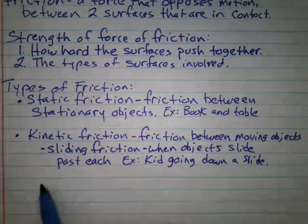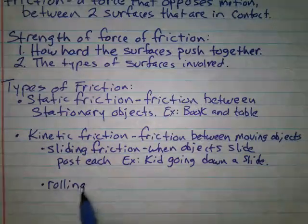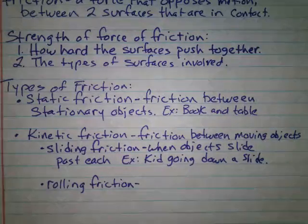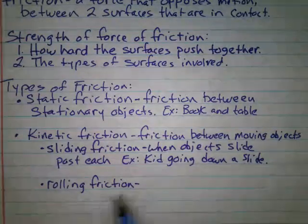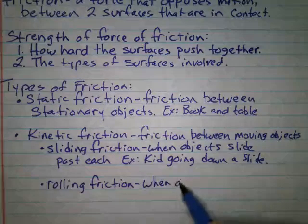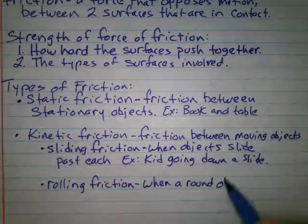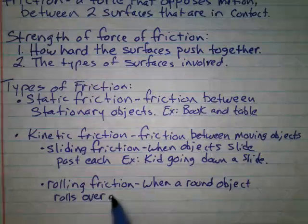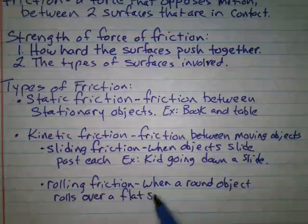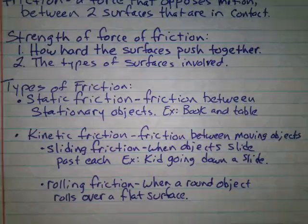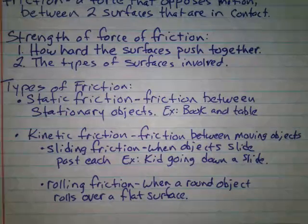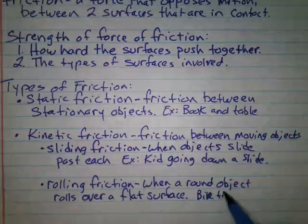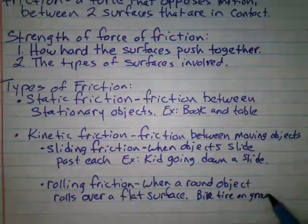Next one is rolling friction. I think about rolling friction all the time when I'm thinking about mountain bikes and mountain bike tires and tire inflation. Rolling friction is when a round object rolls over a flat surface. This would be like a bike tire on ground or a skateboard rolling over something.